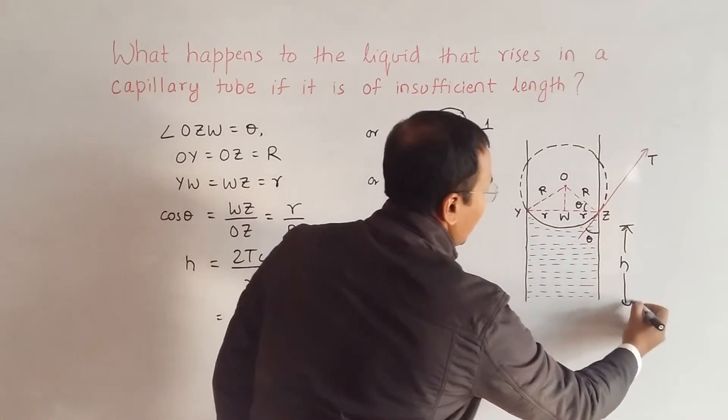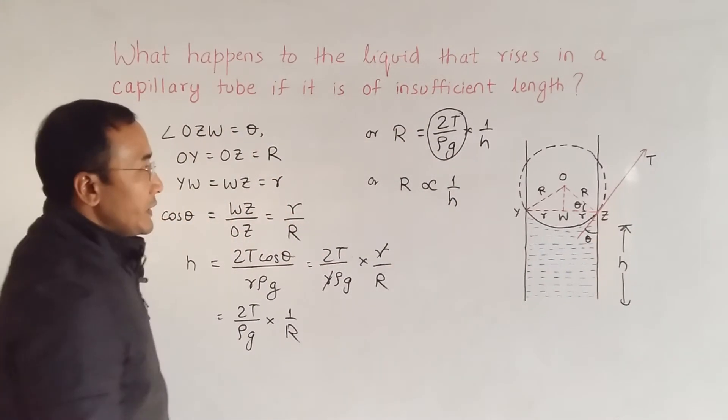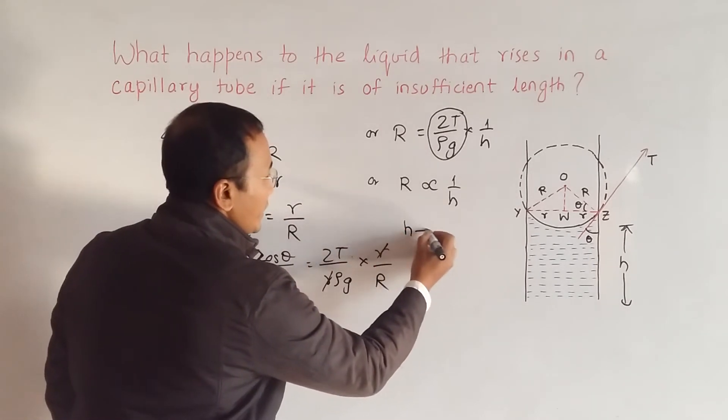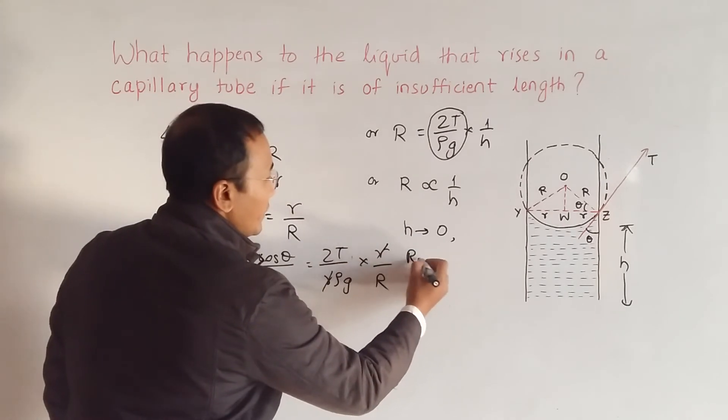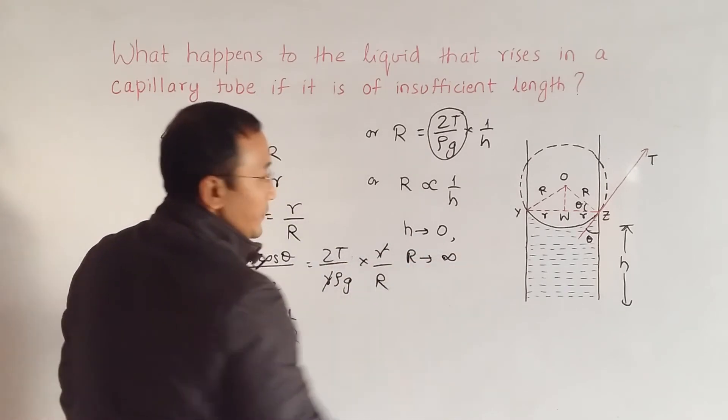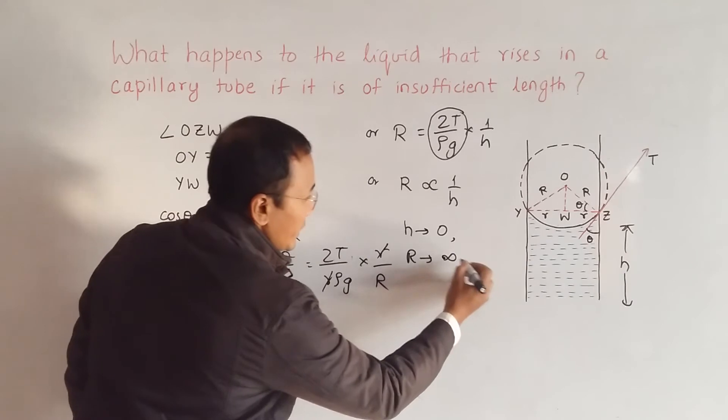As I go on lowering the value of h, it will tend to 0. As h tends to 0, we have R tends to infinity, which means it will tend to become planar.